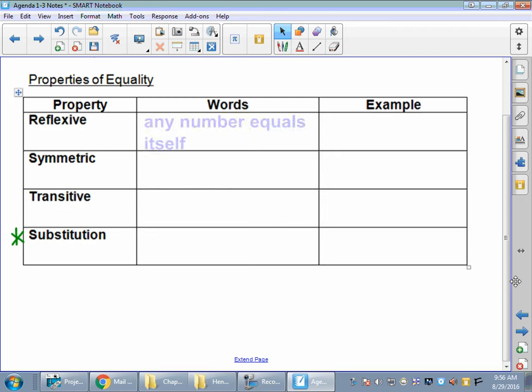So first of all, the reflexive property, any number equals itself. Duh, right? 9 equals 9. Doesn't seem super crucial when we're talking about it in terms of algebra. It's really helpful in geometry and it's kind of one of those no-brainers.